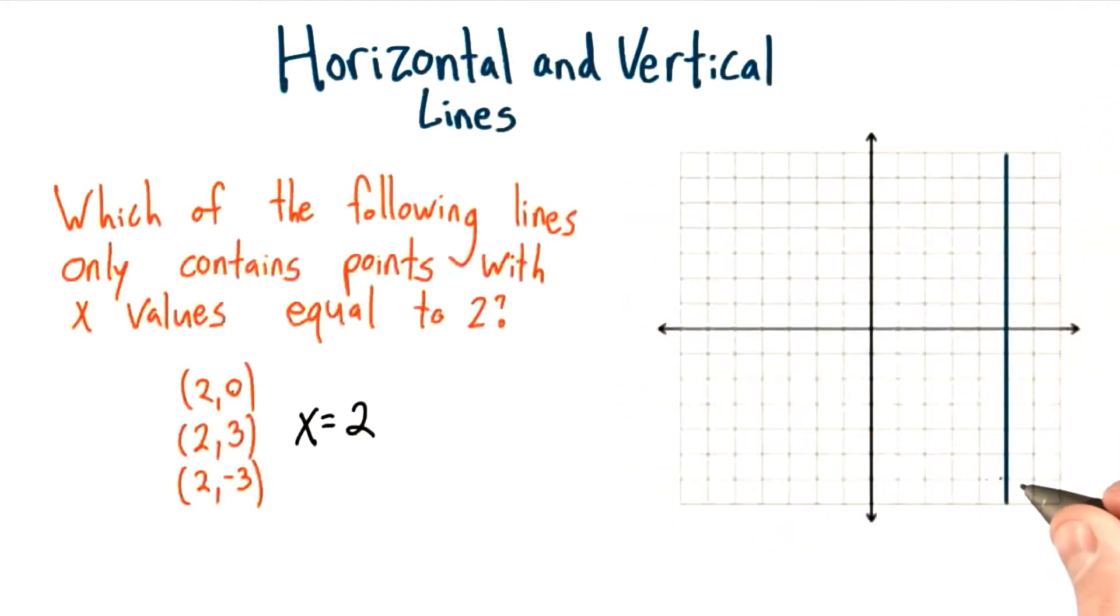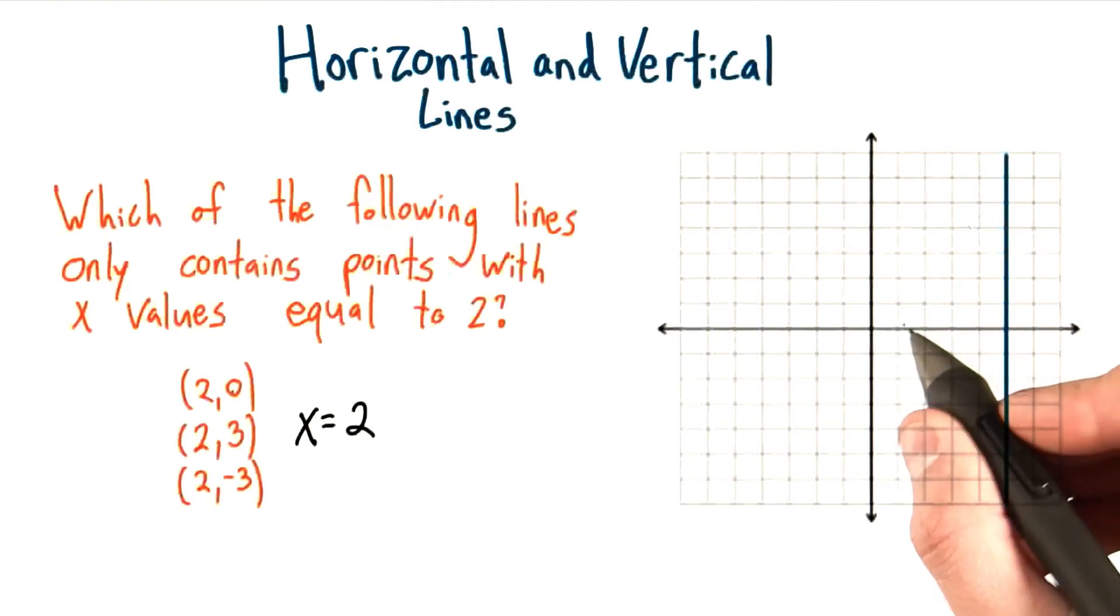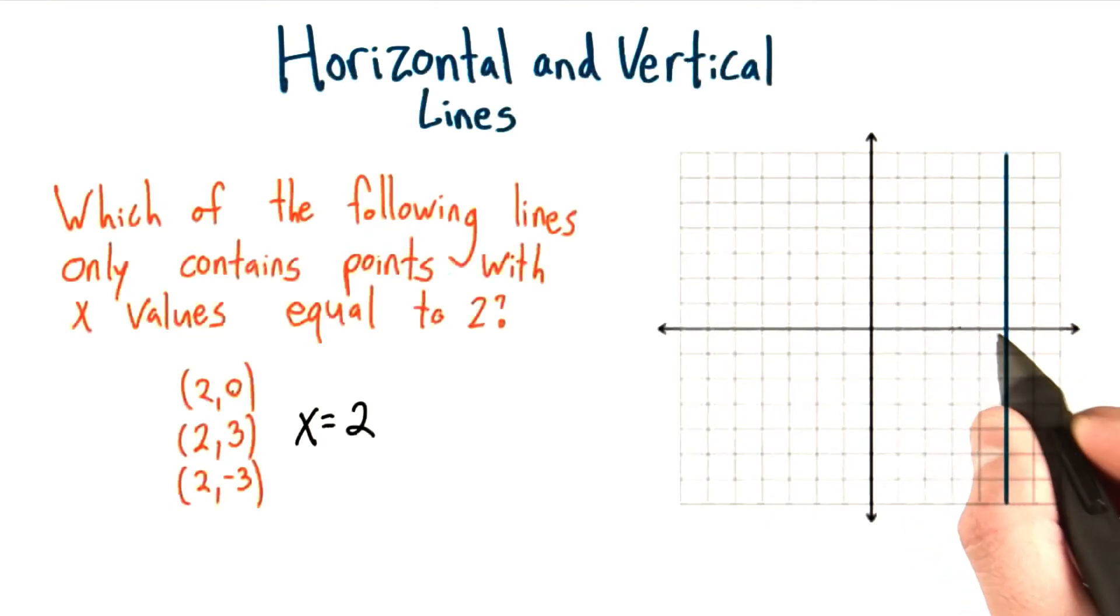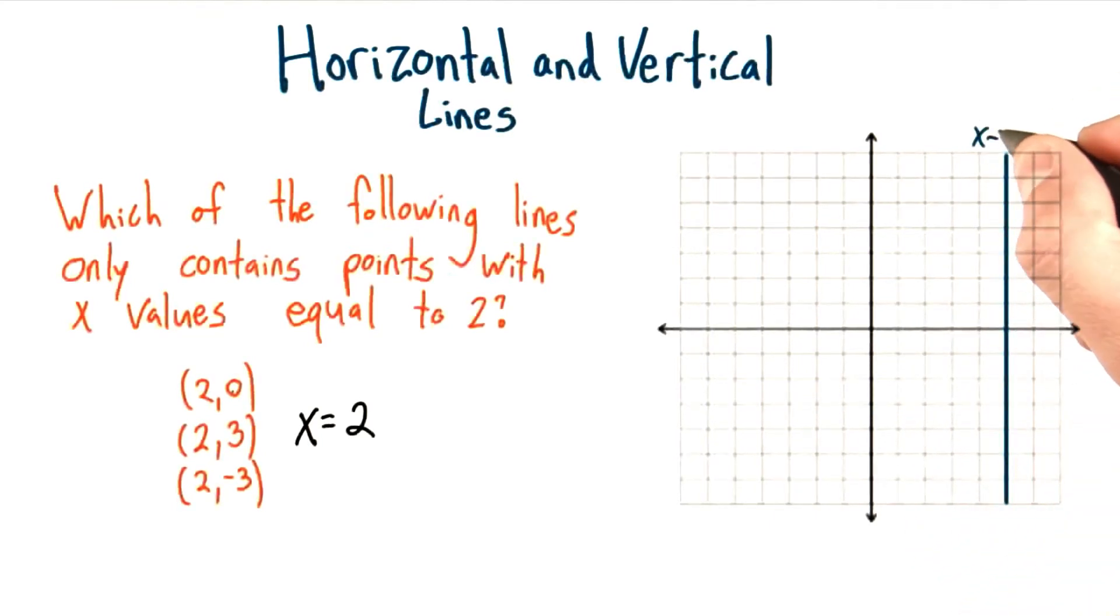If we want to describe this vertical line, well, it looks like all the x values are at 1, 2, 3, 4, 5. They're all at x equals 5, and so that would be the equation.